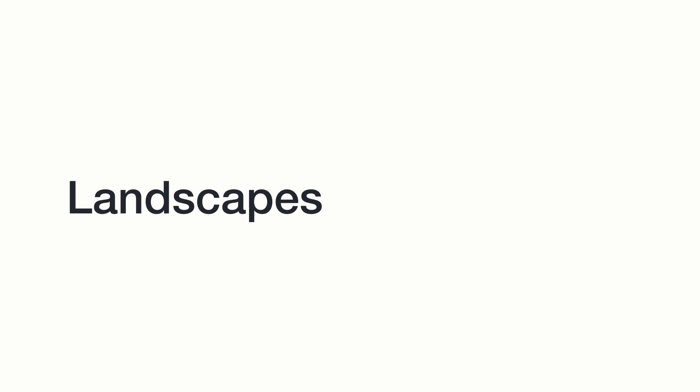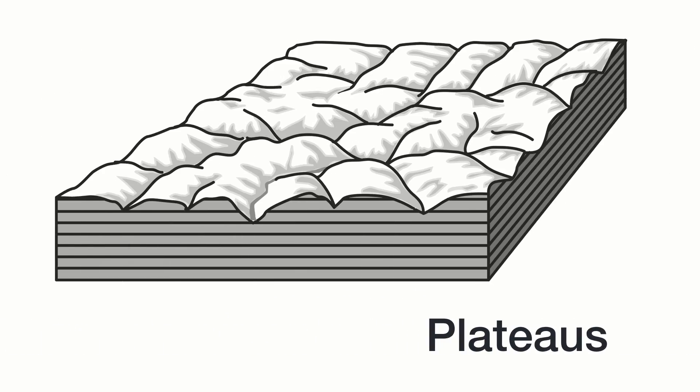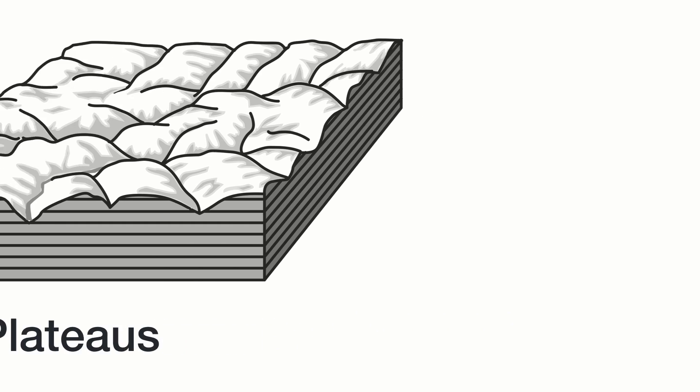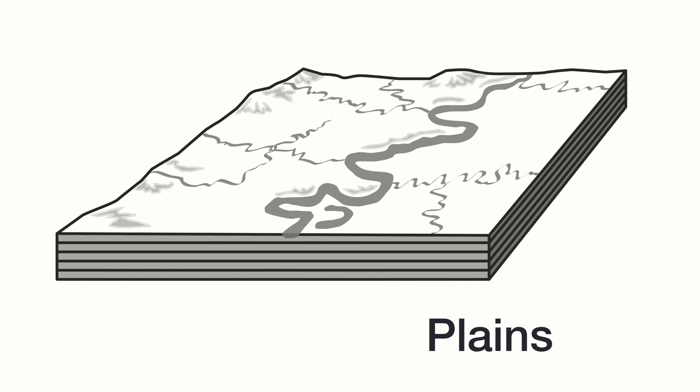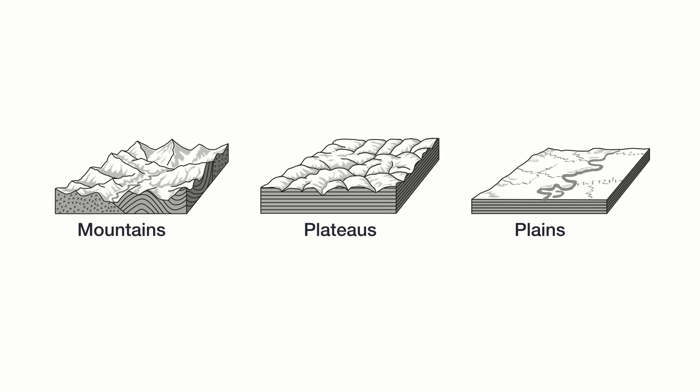Let's take a look at landscapes. All landmasses on Earth can be classified as one of three types of landscape, including mountains, plateaus, and plains. In this video, we'll take a look at the characteristics of each of these types of landscapes.